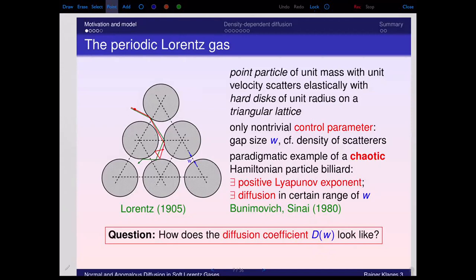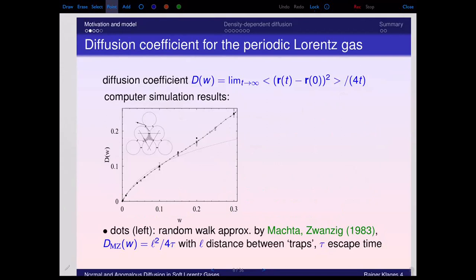The diffusion coefficient is defined in the usual way: consider an ensemble of particles, where the angular brackets denote an ensemble average over N particles. Each particle starts at initial position r at time zero, you look at where the particle is at time t, take the distance, square it, and average over the ensemble. If the mean square displacement increases linearly in time in the long-time limit, dividing by t and dimensionality gives the diffusion constant D.